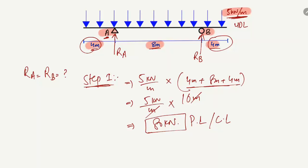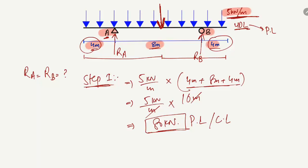We convert the uniformly distributed load into a concentrated load by multiplying the load intensity with the total beam length. This 80 kN concentrated load acts at the center of the beam — exactly at the midpoint of the entire 16-meter span.